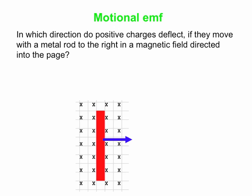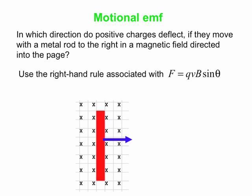So what you can do is you can say, okay, I'm going to just imagine a bunch of positive charges, a bunch of pluses, and they're moving with the rod. So they have a velocity to the right because the whole rod is moving to the right.